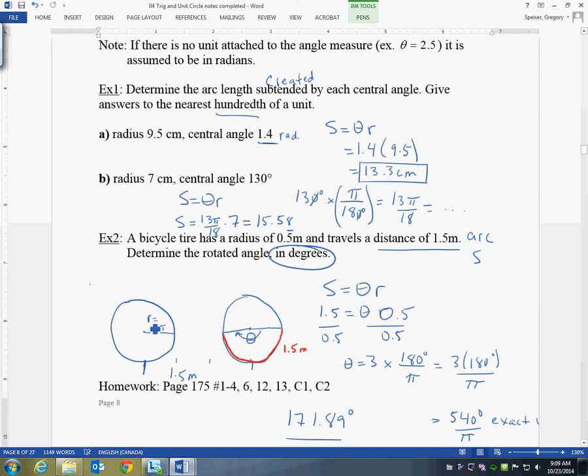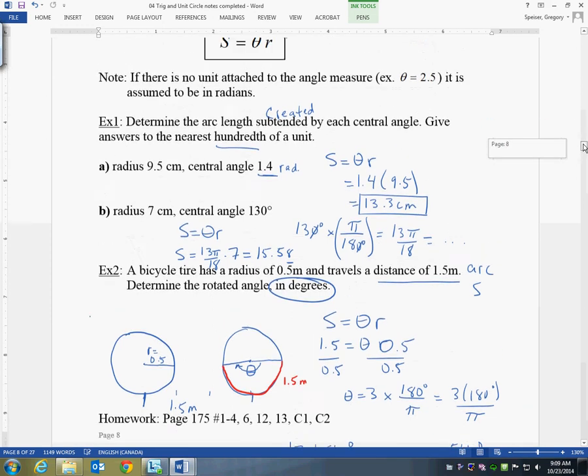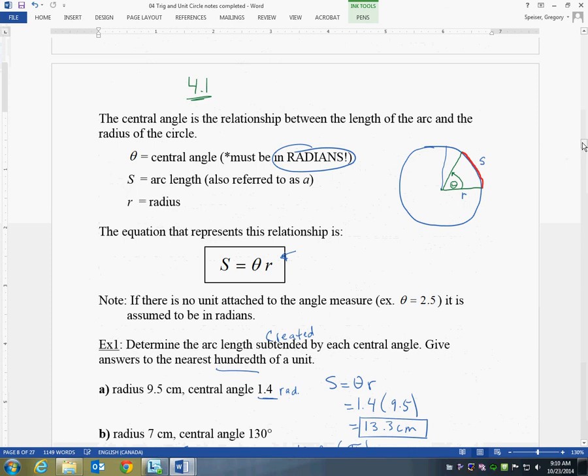The other thing I should mention is that S equals theta times R is the way that this worksheet describes this equation, and this is also the way that the Provincial Exam formula sheet uses, S equals theta R. The textbook uses A equals theta R. So A means the same thing as S, is that arc length. R is the radius, theta is the angle in radians, A is the arc length for the textbook version, S for our version, and for the Provincial Exam version.